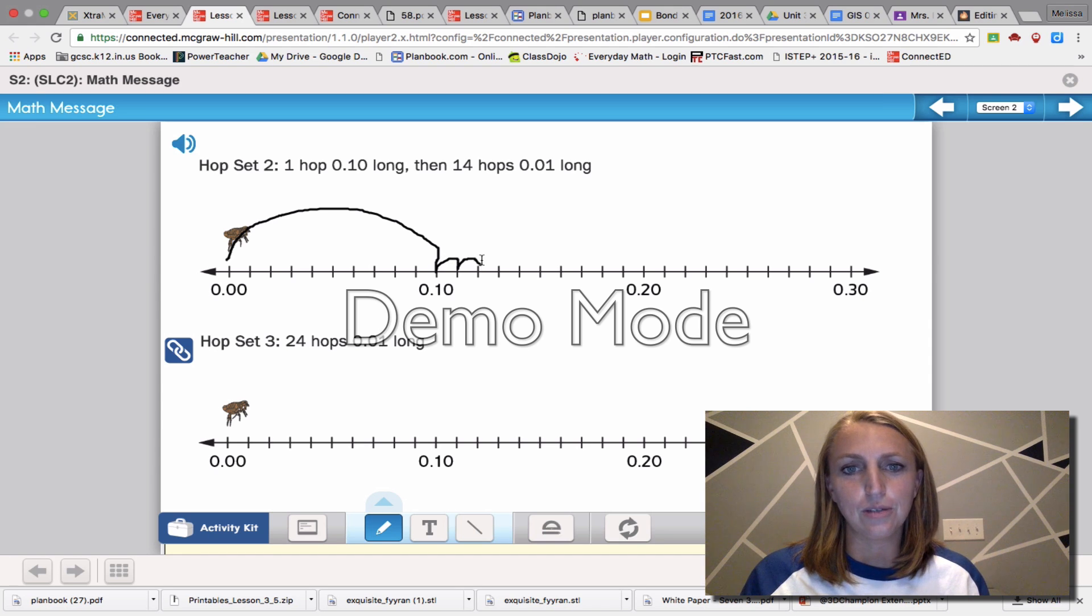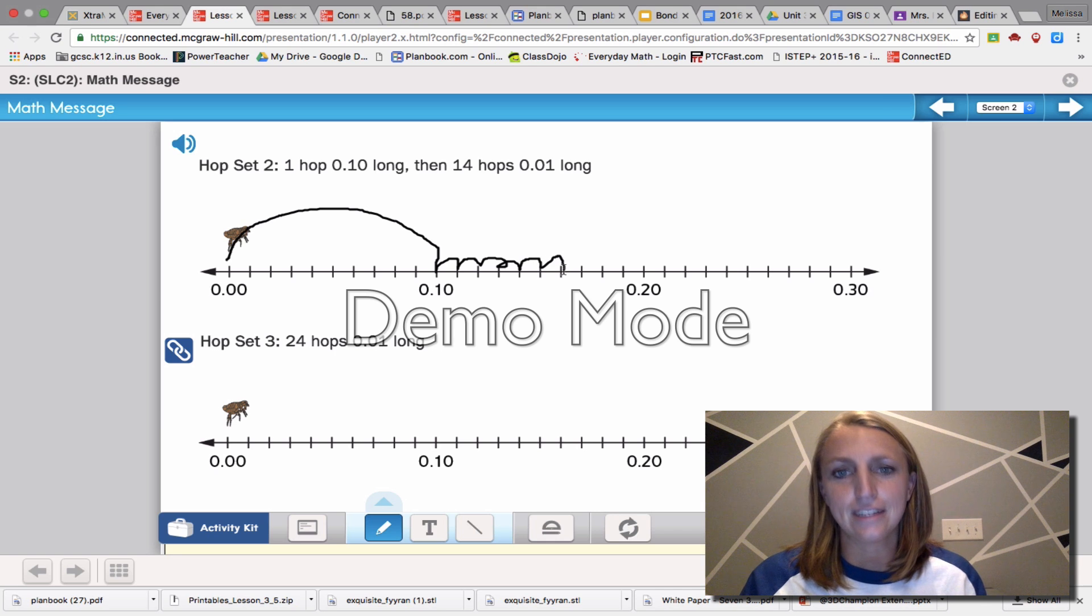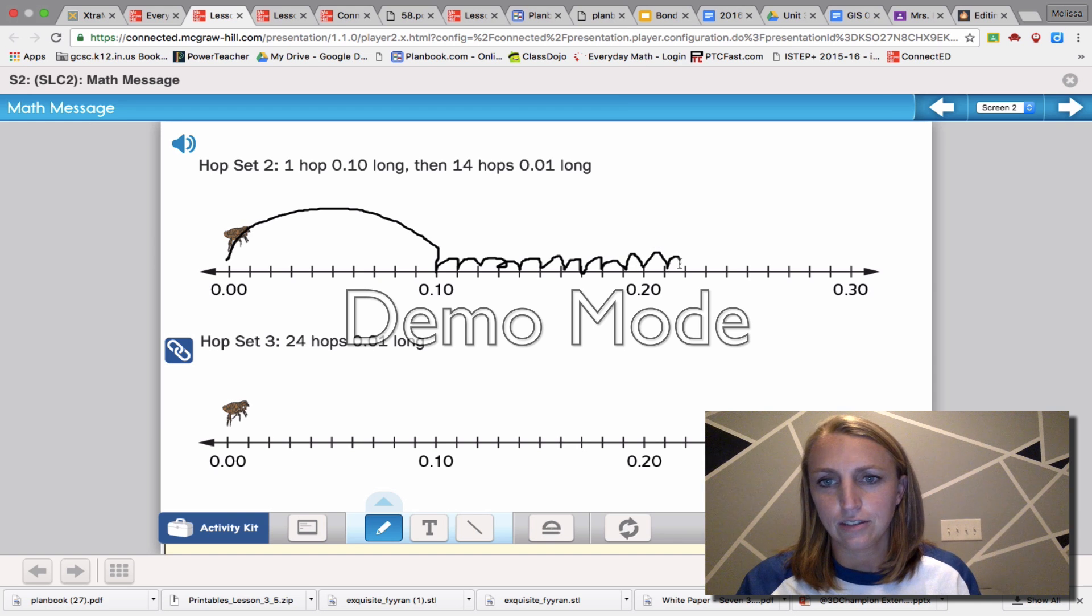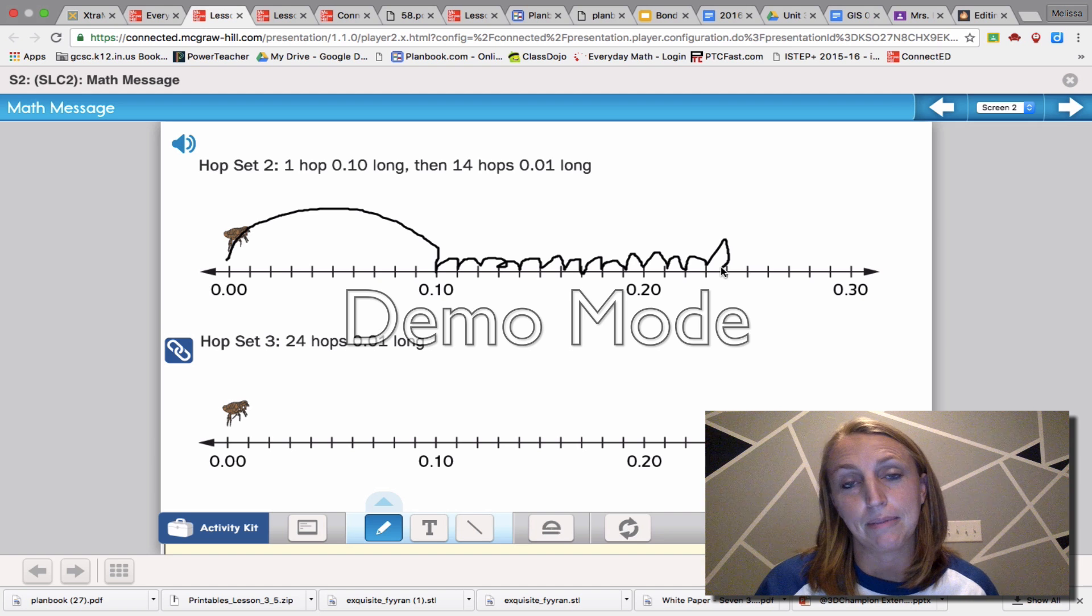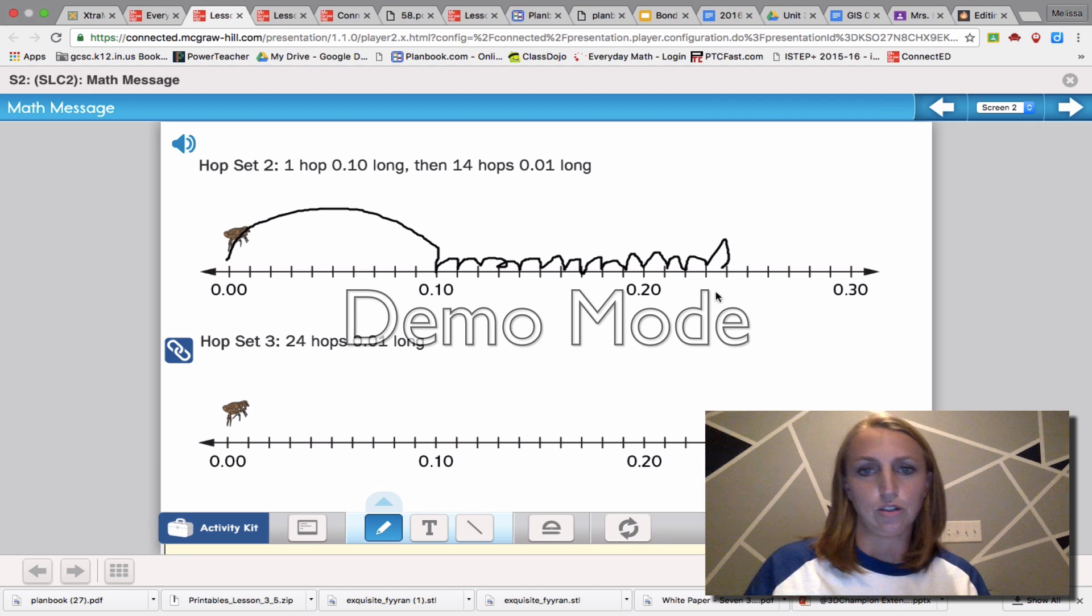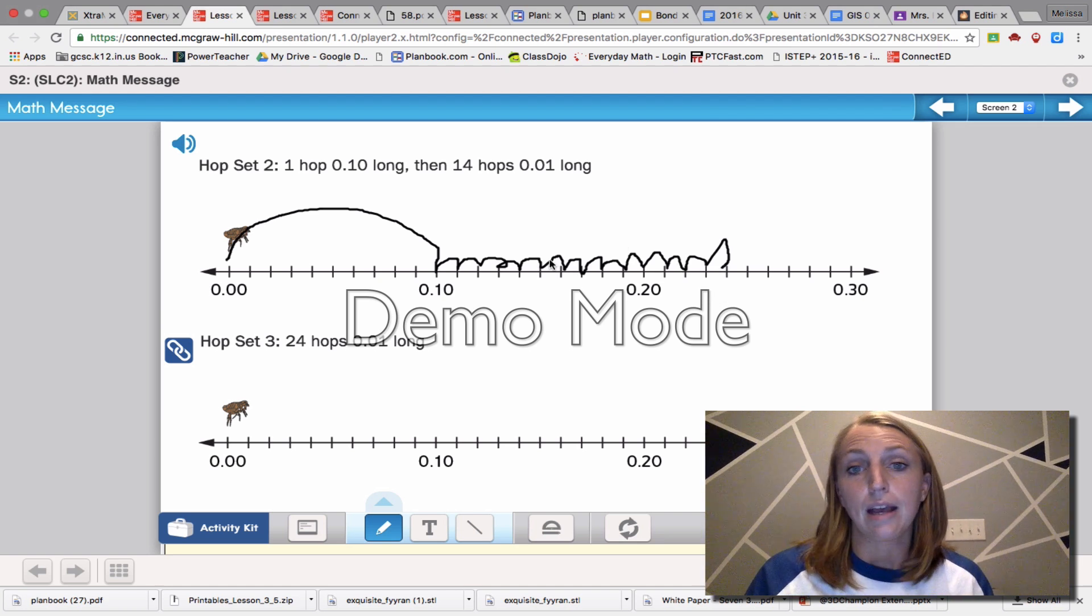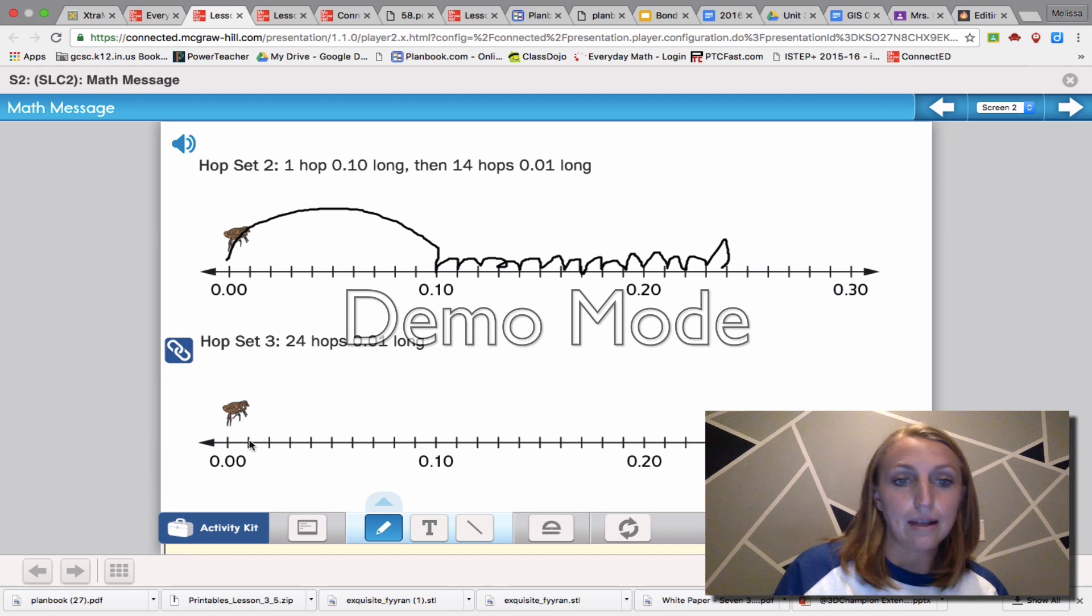So one, two, three, four, five, six, seven, eight, nine, ten, eleven, twelve, thirteen, fourteen. By the way, I'm using my Mac, not my stylus, so that's why my little jumps look a little bit ridiculous. Okay, we still get to 24 hundredths. Same thing.